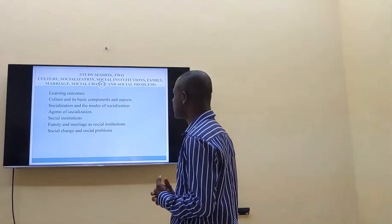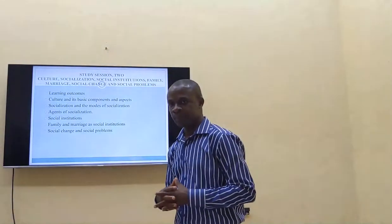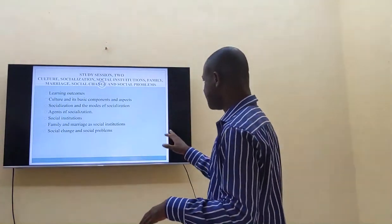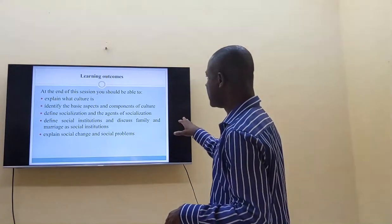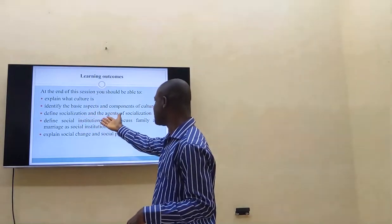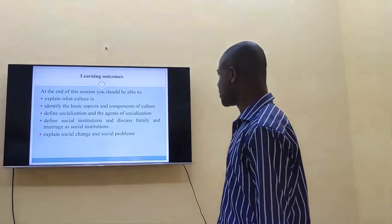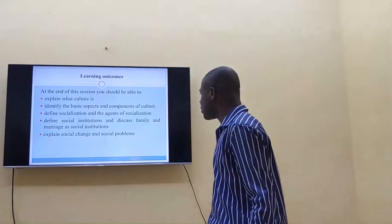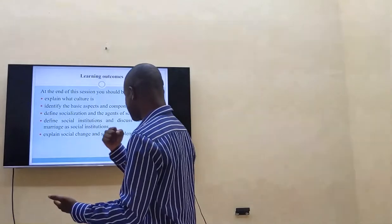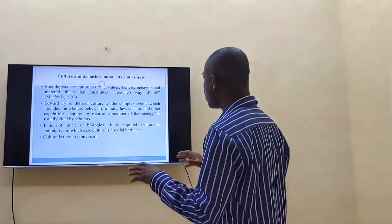Let's move to study session two. We're going to be looking at culture, socialization, social institutions, family, marriage, social change, and social problems. At the end of this session, we are expected to understand and explain what culture is, identify the basic aspects of culture, define socialization, define social institutions, and discuss family and marriage as social institutions.